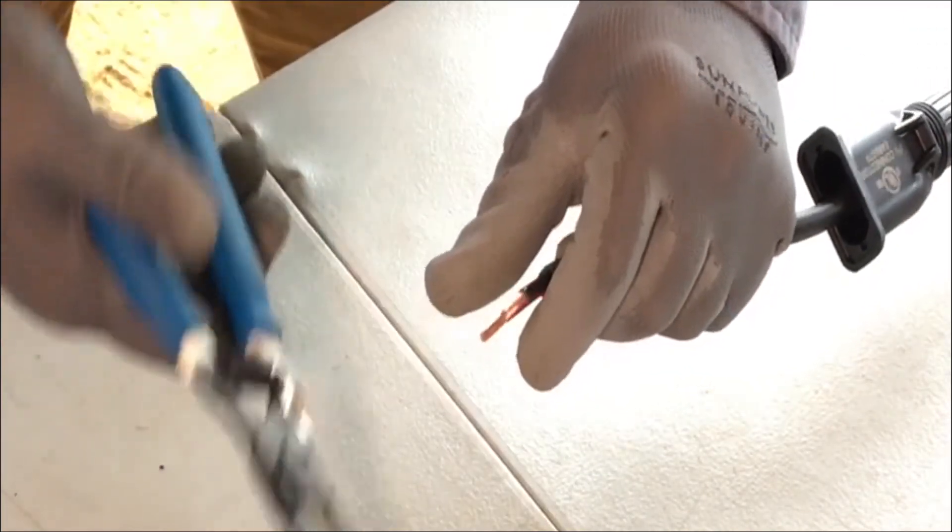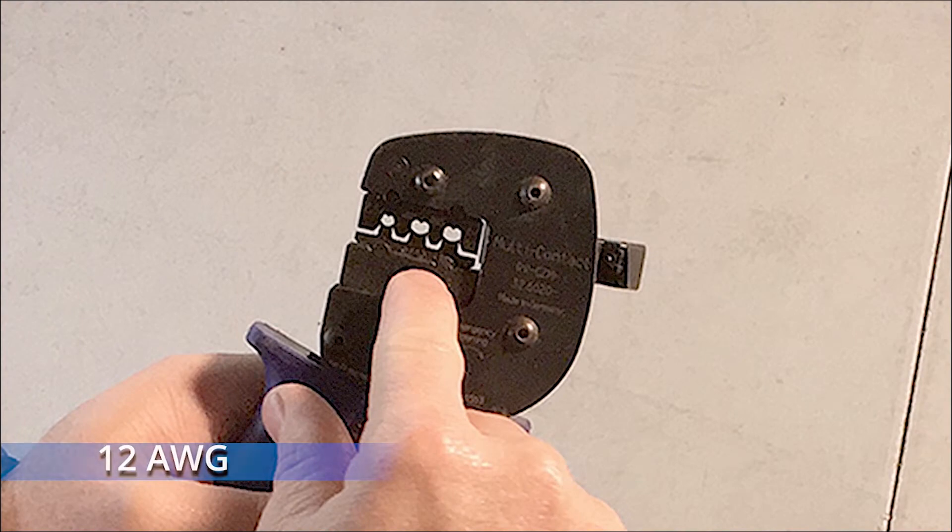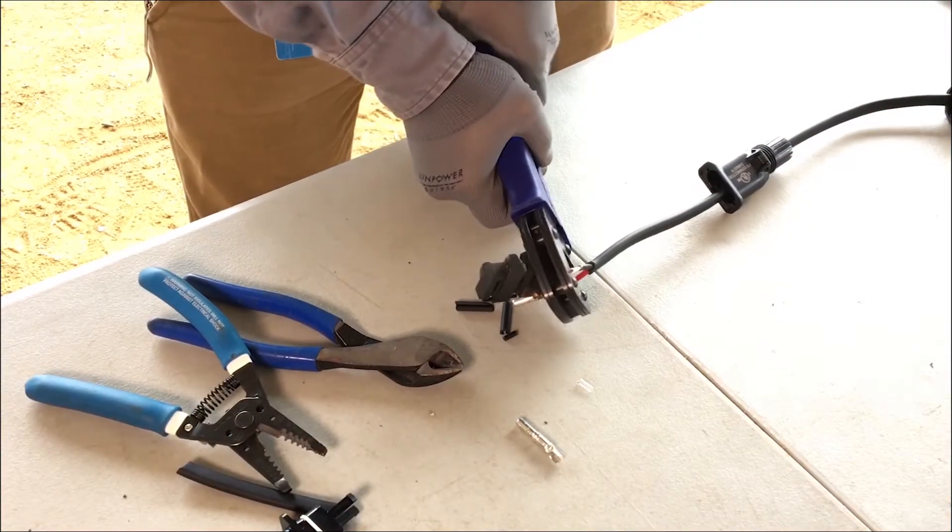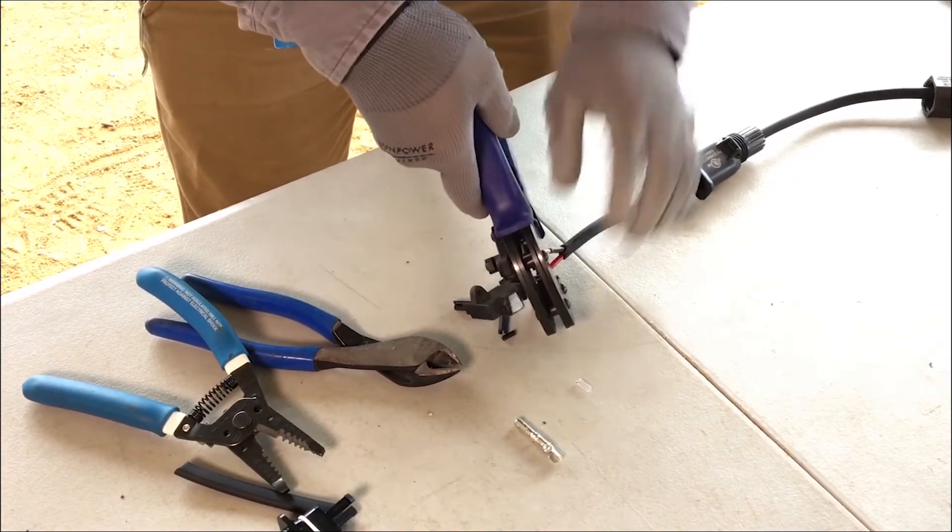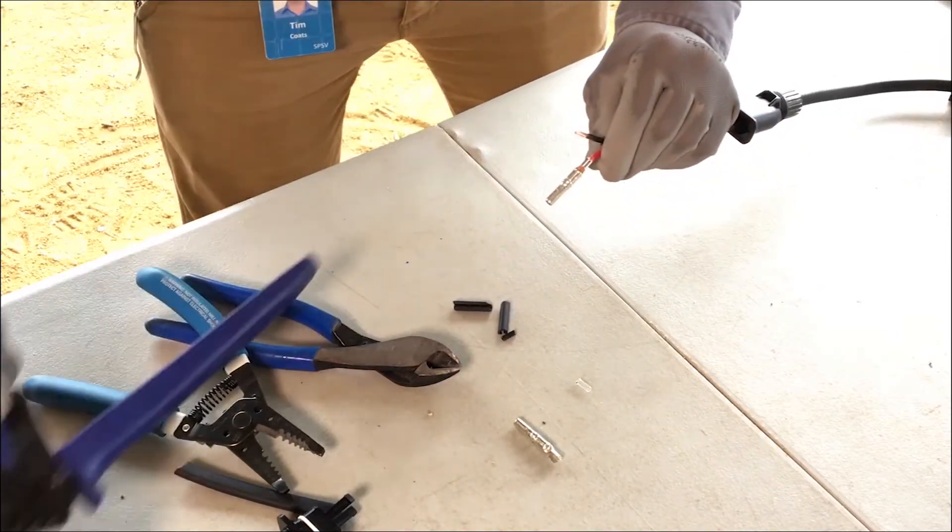Use the 12 AWG slot of the MC4 crimping tool to secure a terminal to the red conductor. Be sure not to crimp over the insulation.